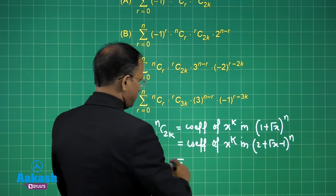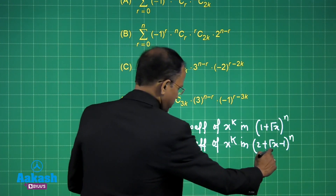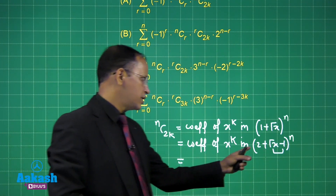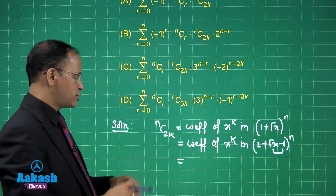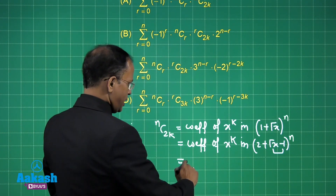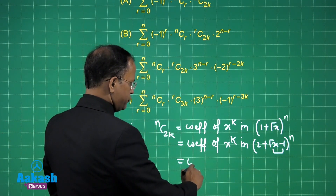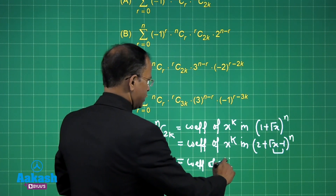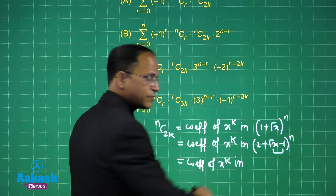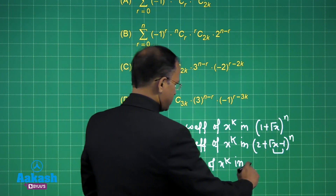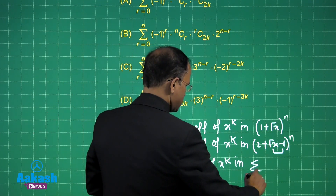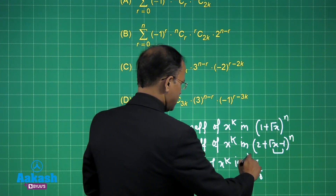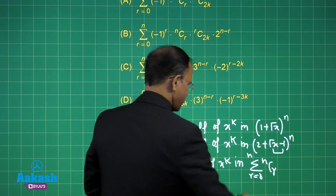We can treat one term as a single unit and the other as 2, taking the x plus y form. This gives us the coefficient of x to the power k in summation form. We write the summation from r equals 0 to n, giving us nCr.